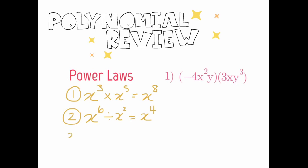The third power law you should be familiar with is a power of a power, and it looks like this. For a question like this, what you're going to do is take both exponents and multiply them together. So this would give us x to the power of 12.